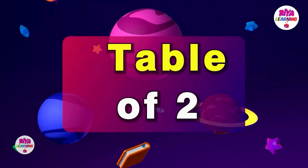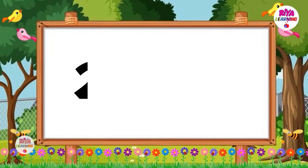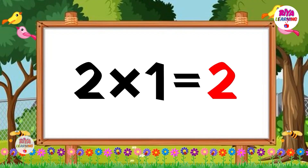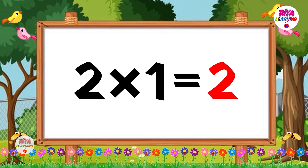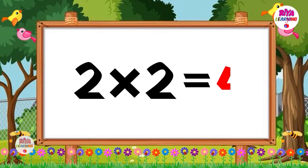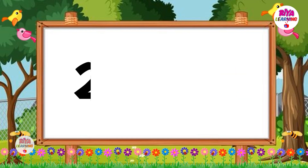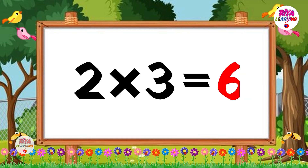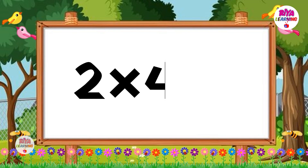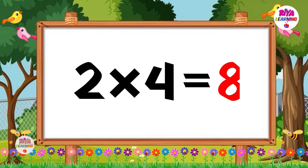Table of two. Two ones are two. Two twos are four. Two threes are six. Two fours are eight.